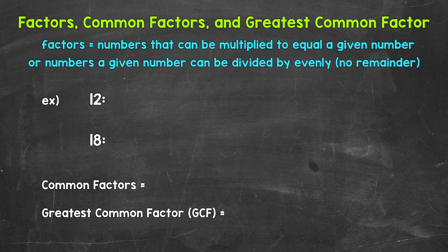When we think of factors of a number, we need to think what numbers can we multiply to equal that given number, or what numbers can we divide that given number by evenly, so divide with no remainder. It's not the most technical or mathematical way to word it, but you can think what numbers go into the given number. This will all make a lot more sense as we go through our example.